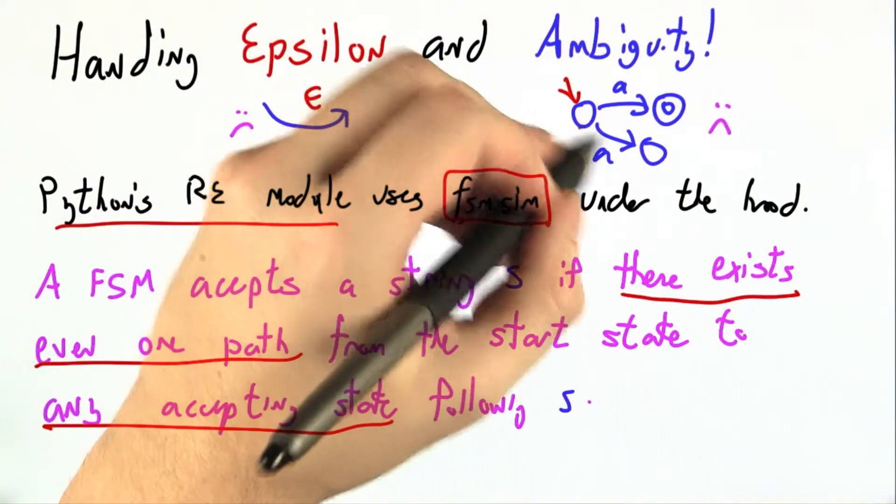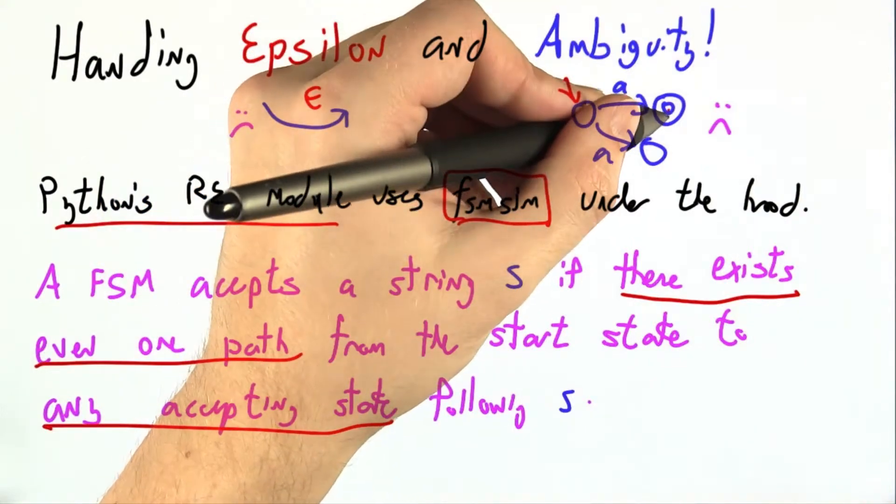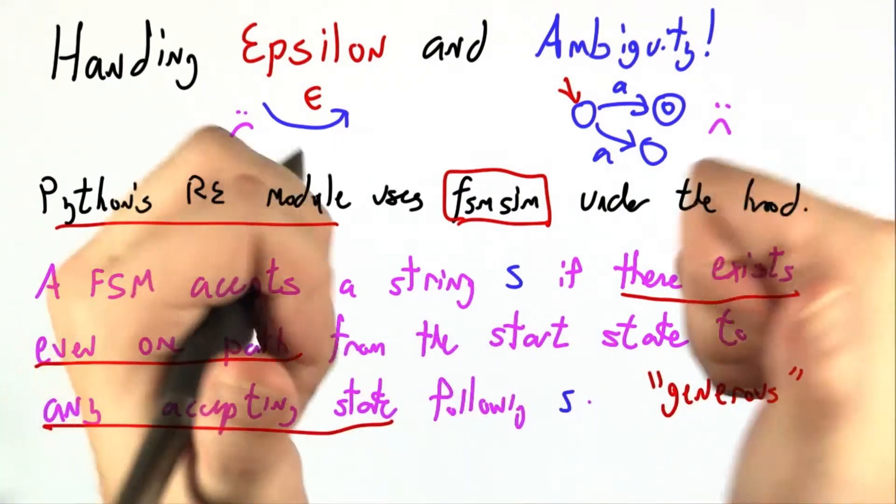So this finite state machine accepts A because there's one way to do it where A causes you to end up in an accepting state. If you like, you can say that finite state machines are generous. If there's any way to accept, we will make that work.